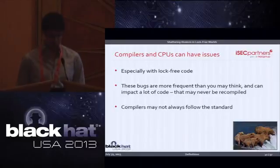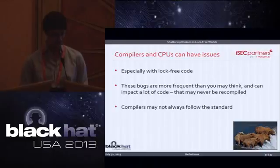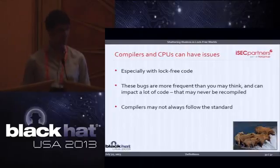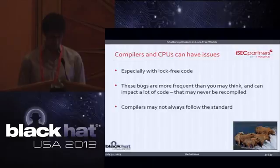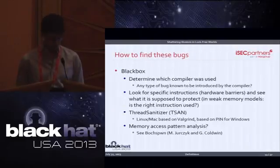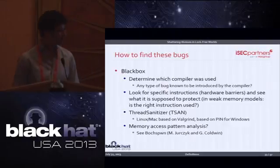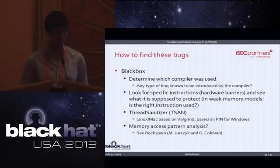So again, lock-free code is hard — and not only to application developers, but also to people writing compilers. Compiler bugs exist and they are more frequent than you may think, and this can potentially impact a lot of code that will probably never be recompiled again. Finding which version of the compiler was used, as well as knowing bugs a specific compiler can introduce, could be a start.